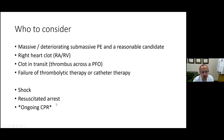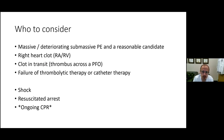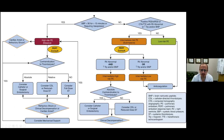Not every patient is a candidate, but patients who should be considered include those with massive PE or deteriorating submassive PE who are reasonable surgical candidates, those with clot in the right atrium and right ventricle, those with clot in transit across a PFO into the left heart, those who have failed thrombolytic or catheter-based therapy, and those with shock or resuscitated arrest who should be placed on MCS. Ongoing CPR is a difficult situation — there are case reports of good outcomes, but CPR tends to be rather ineffective with large pulmonary vascular clot burden.